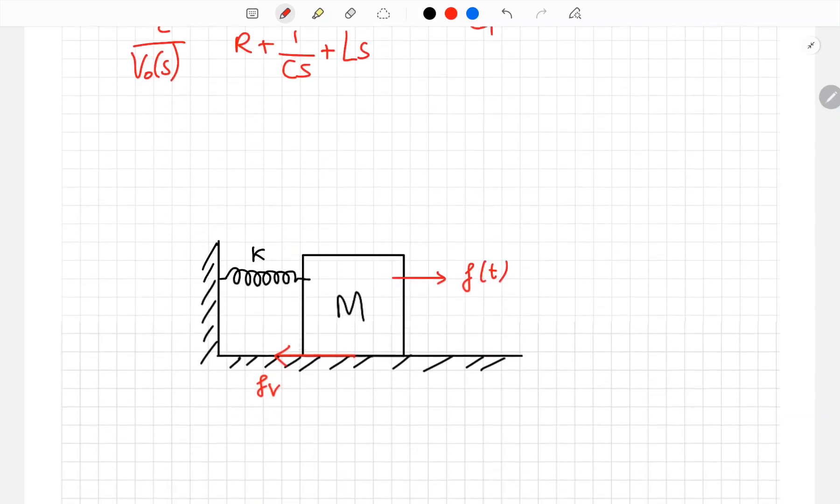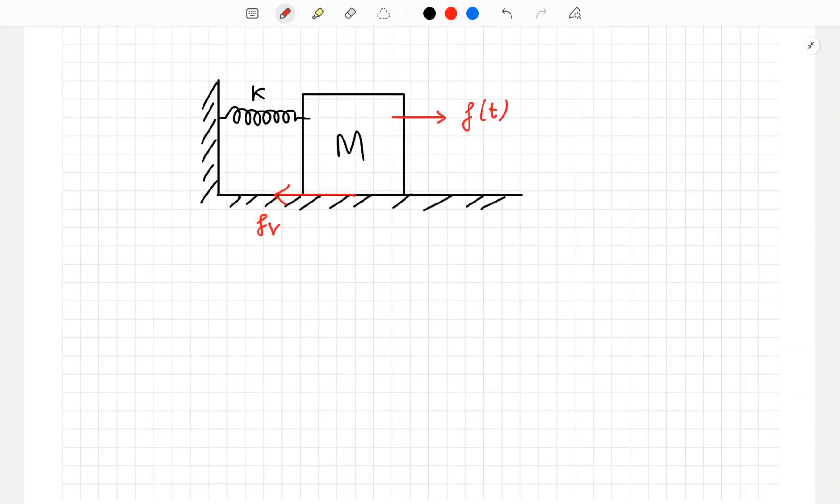Moving from electrical system, this is a mechanical system. We have an object of mass M. There is spring with spring constant K attached to M. In the bottom, there is friction force FV on M. And finally, there is an external force F of T applying on M. The input is external force F of T and the output is how much this mass M move, this distance is X.